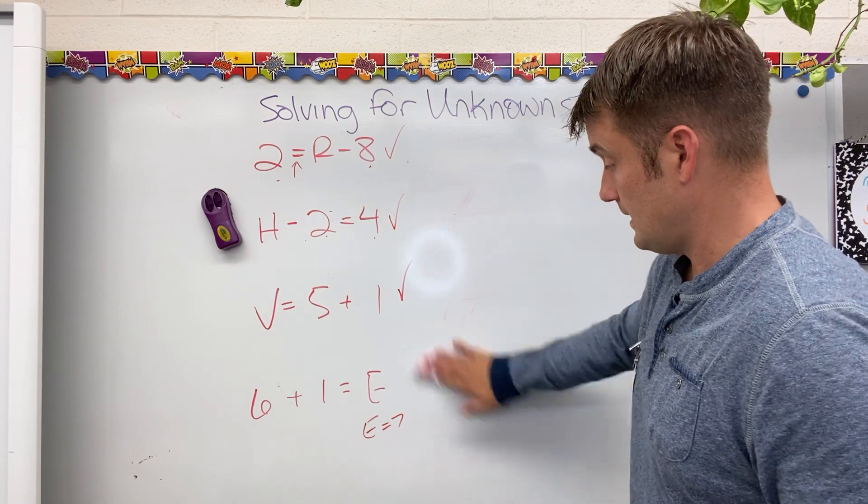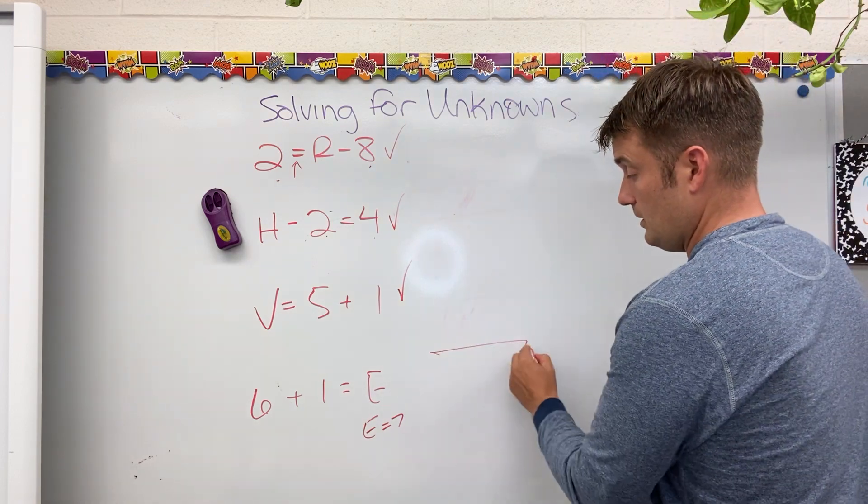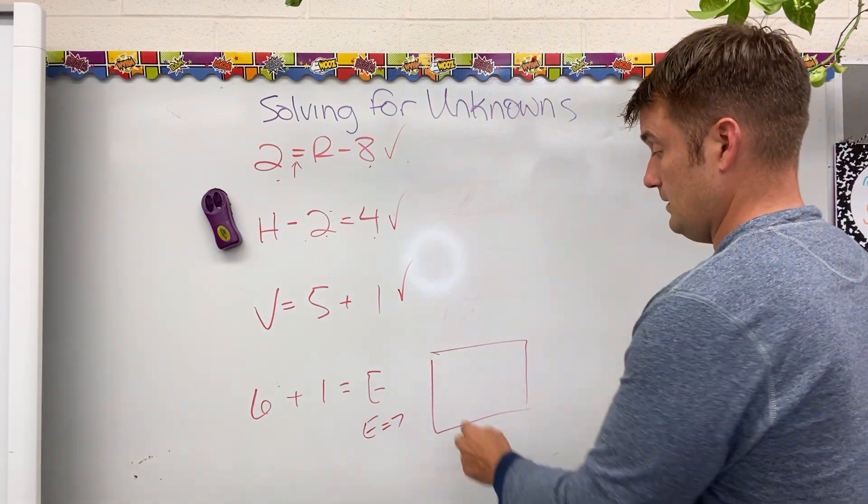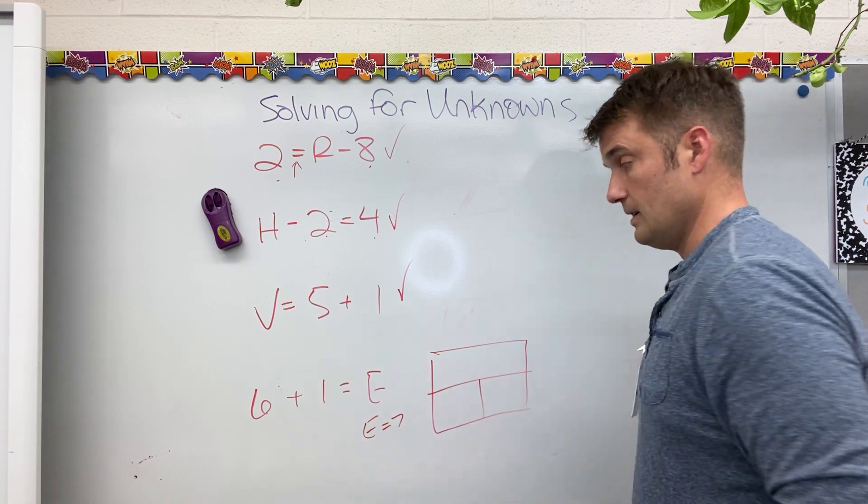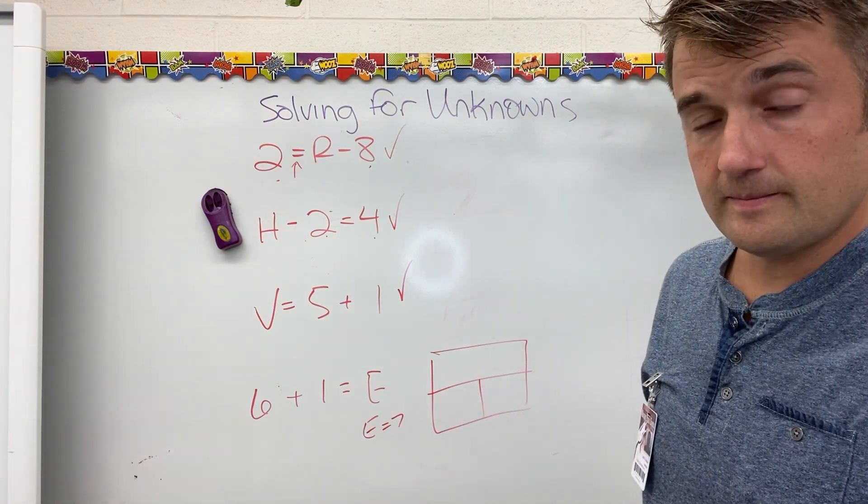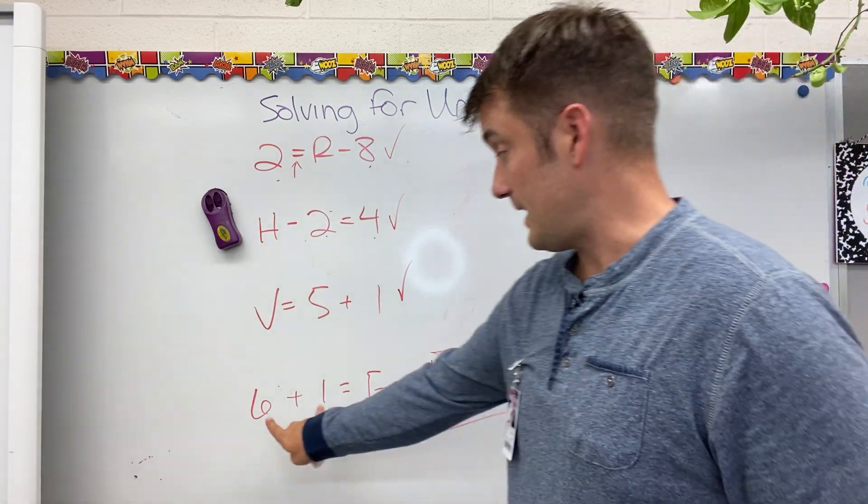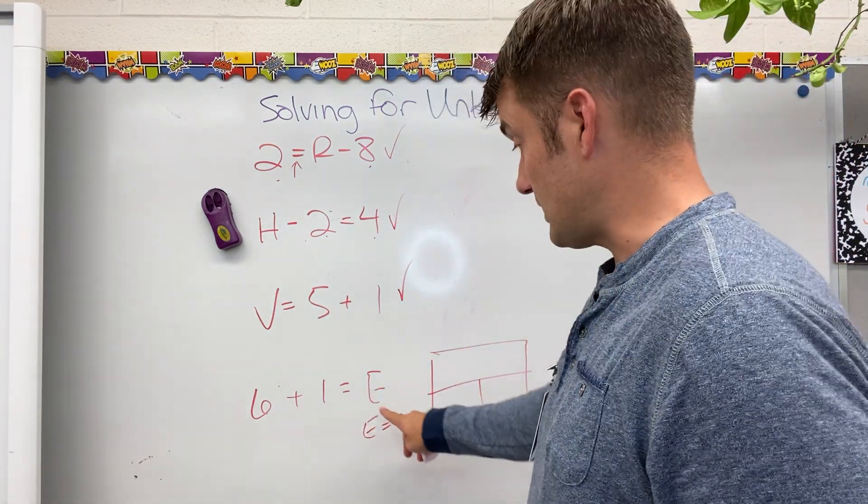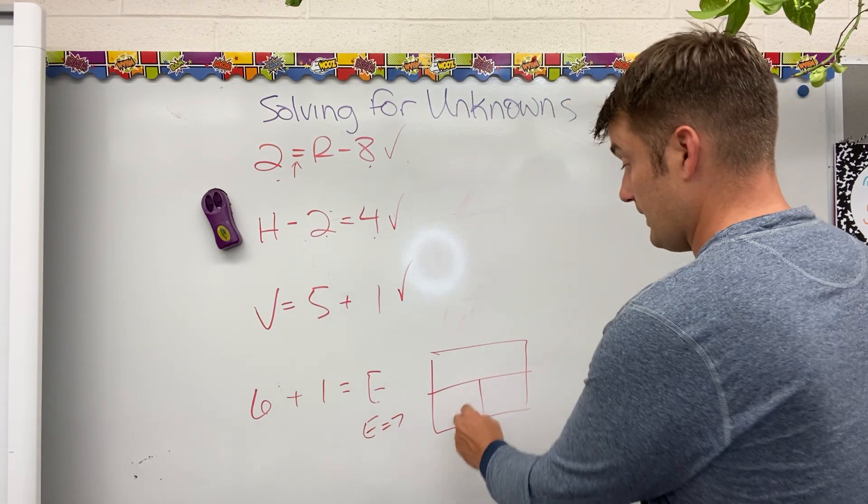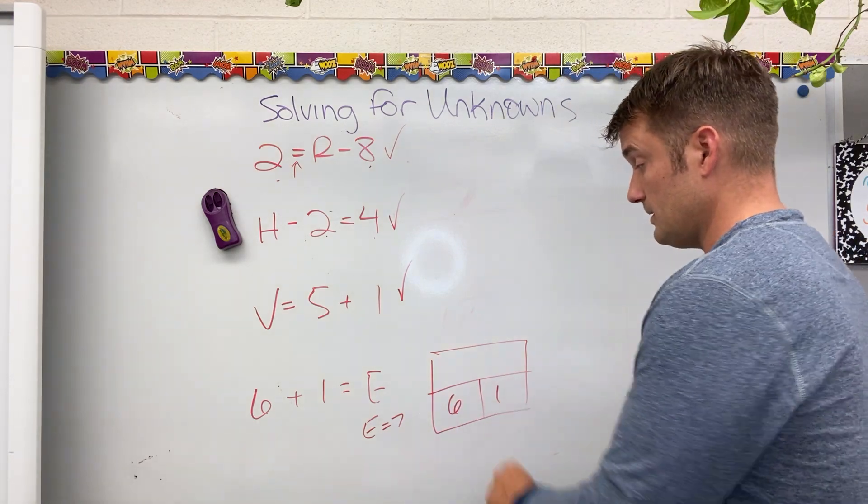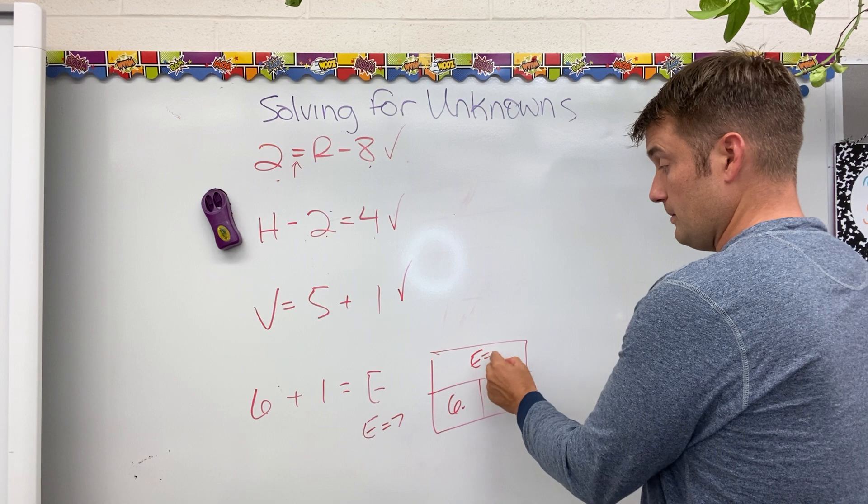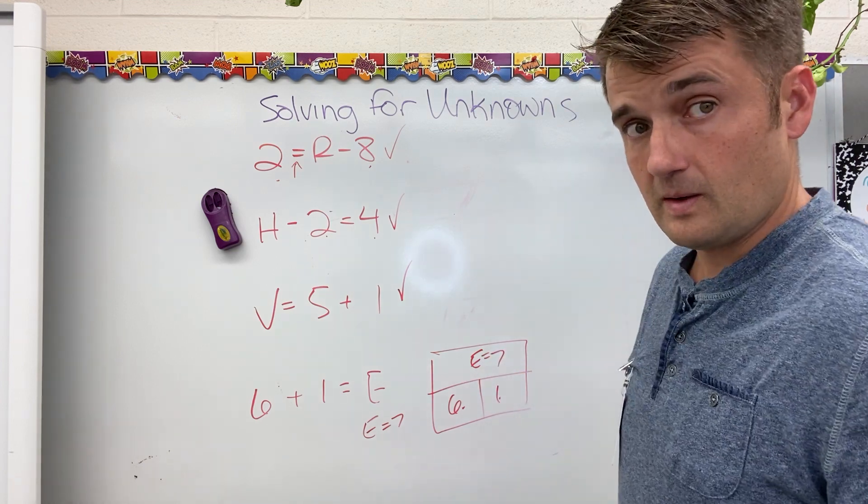If I go at it from a parts and a whole perspective, with addition, you always add the parts and make the total. I'm adding parts to make the total. If I'm adding the parts, 6 and 1 are the parts, e is the total. 6 and 1 make 7.